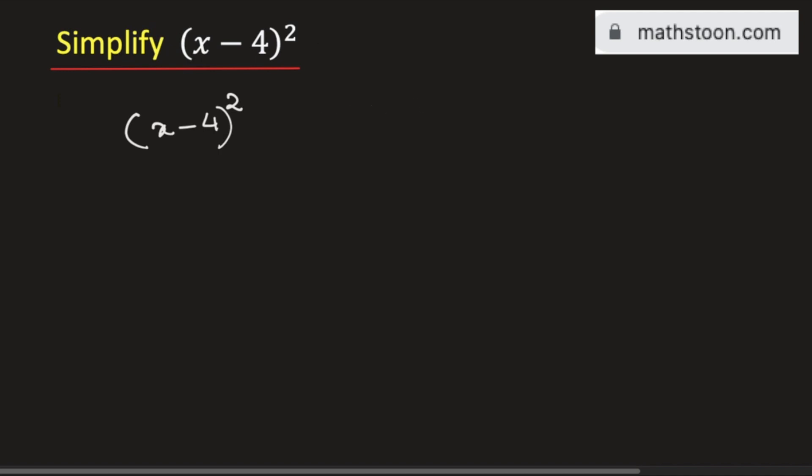To simplify it we will use the formula of (a - b) whole square which is equal to a² - 2ab + b². In this formula we will put a is equal to x and b is equal to 4.